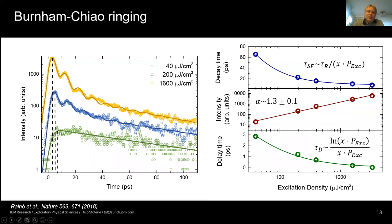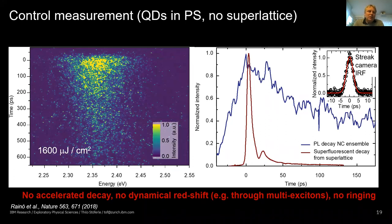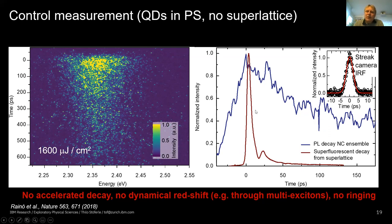The delay time shifts more and more to earlier times with increasing power — as expected for superfluorescence, the delay before the pulse shortens with higher excitation density. A control measurement using the same quantum dots dispersed in an inert matrix with sufficient spacing to prevent coupling shows this streak camera image has an enlarged time scale due to slow decay. Comparing the superfluorescent curve (red) versus dispersed dots in polystyrene (blue): no dynamical red shift, no ringing, and no significant speedup even at high power — confirming these are multi-particle effects.